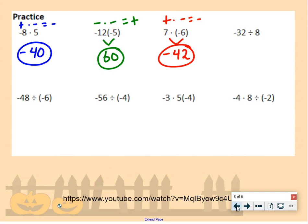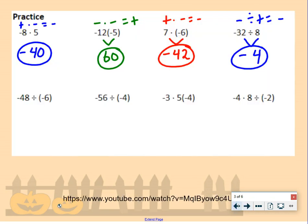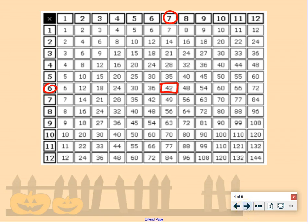Negative 32 divided by 8: a negative divided by a positive is a negative, so our answer is negative 4. To use the chart for division, find the 8 column, scroll down to find 32, and see where it connects — which is at 4. So 32 divided by 8 is 4.